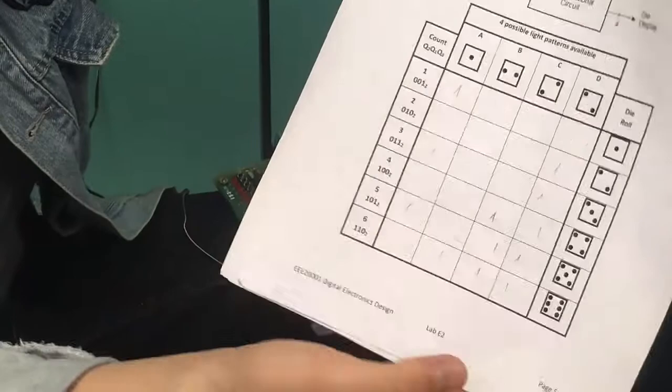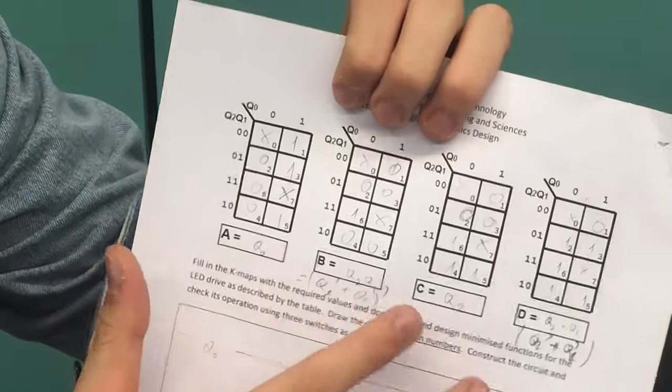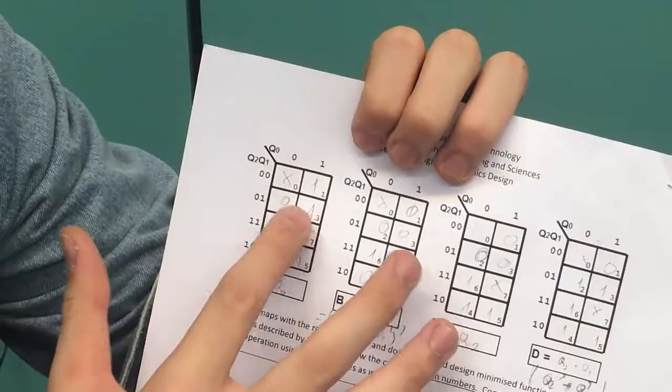This is the Karnaugh map for the light pattern A, B, C, D. 0 and 7 have no pair and the others are 1 and 0 according to this table. Based on this, I know A is Q0, B is Q2 and Q1.